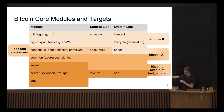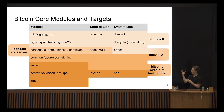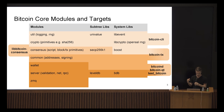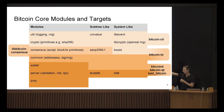We also include the elliptic curve library and LevelDB because they are consensus critical. Then we also have dependencies on general system libraries, for example OpenSSL which we use only for the random number generator, libwind, and we use Boost for advanced C++ language features.